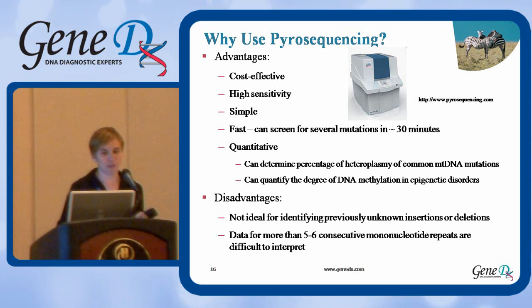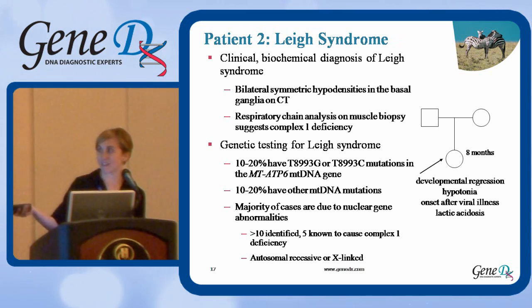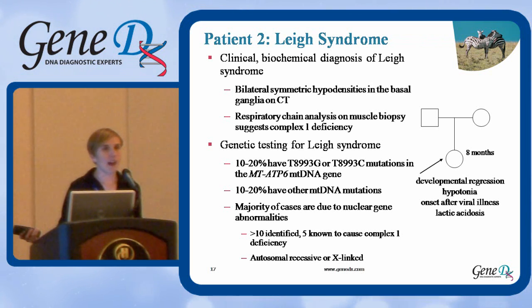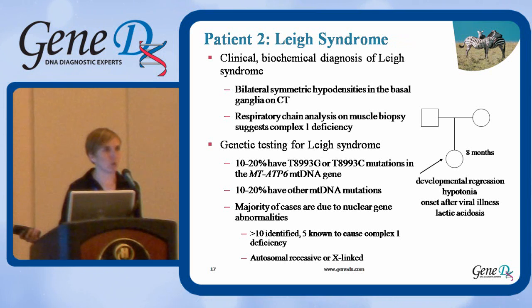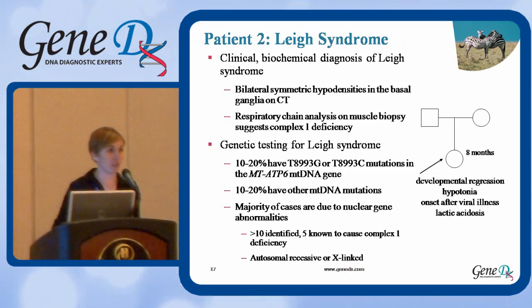As with all of these technologies, any abnormal results should be confirmed using a different methodology, so you want a full-service lab with multiple capabilities beyond just pyrosequencing. Coming back to the second patient with a clinical and biochemical diagnosis of Leigh syndrome — a muscle biopsy suggests complex I deficiency. About 10 to 20% of patients with this diagnosis have a mutation at the 8993 position in the mitochondrial MT-ATP6 gene, about 10 to 20% have mutations in other mitochondrial genes, and 60 to 80% have mutations in nuclear genes. More than 10 nuclear genes have been identified, five specifically known to cause complex I deficiency, highlighting the many genetic testing options that may be needed.